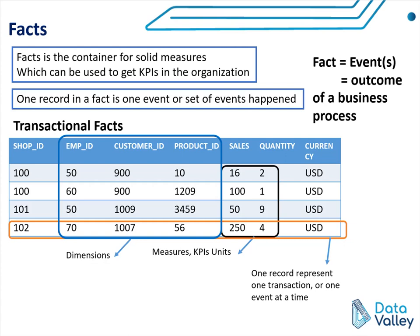If we are going to build a transactional fact around purchase operations, one record in this fact table will represent one purchased item. So in transactional fact, we have columns representing measures, columns representing dimensions, and one record representing one transaction or event at a time. The grain in transactional fact represents one transaction or event per record, so the lowest level of detail is one transaction or one event per record.